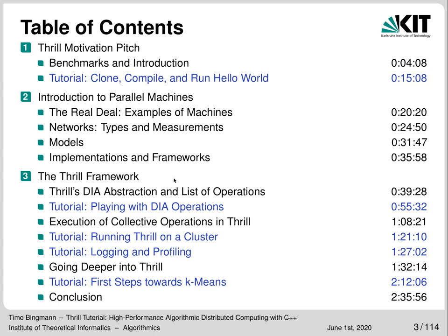Part three is the main introduction into Thrill. It starts with the DIA model — the distributed immutable array — which is the high-level concept used in Thrill to program arbitrarily complex algorithms by composing them out of primitive operations such as map, sort, reduce, zip and many others. This first section of part three gives you a high-level picture of each of these operations.